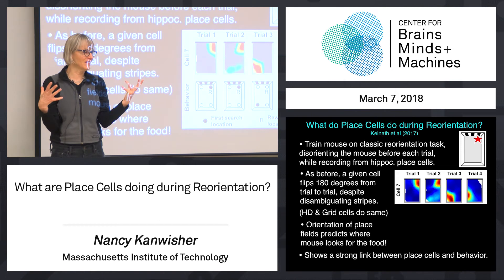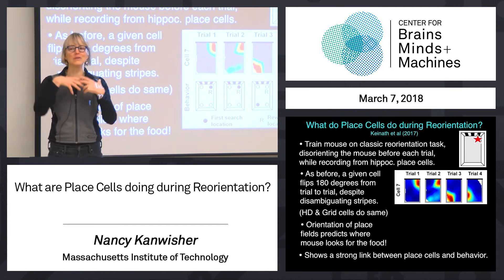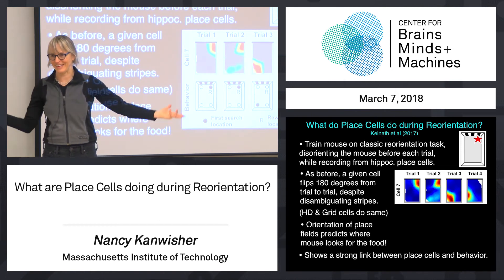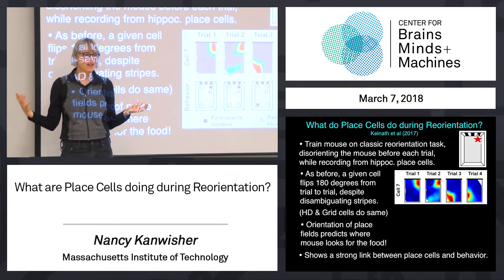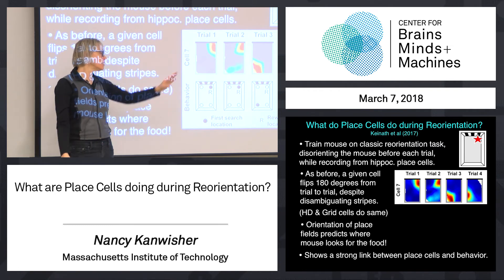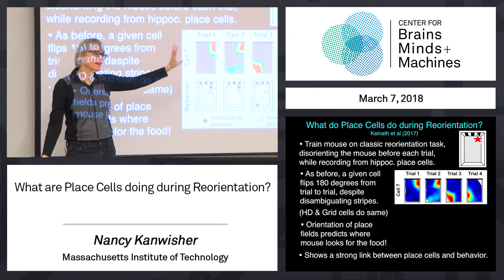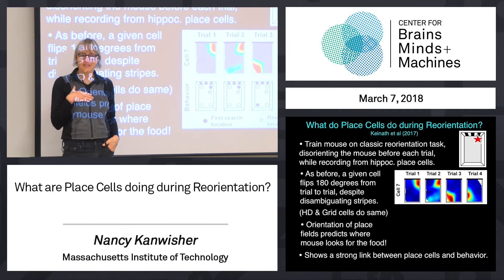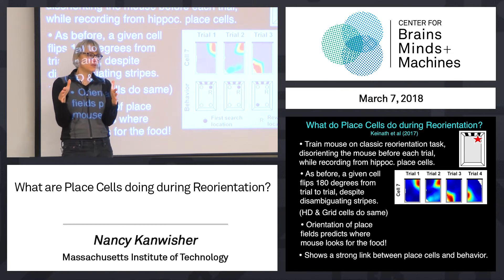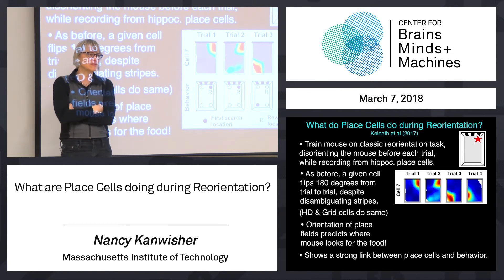This whole thing is linked. This beautiful long-standing set of behavioral studies on reorientation are now linked to the behavior of hippocampal place fields. They all go together, and the place fields tell you which way the mouse thinks he's oriented and hence which place he's going to look for the food.